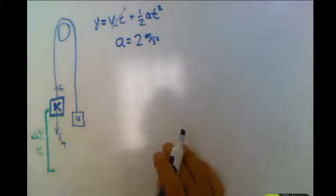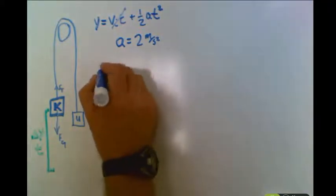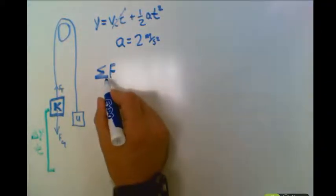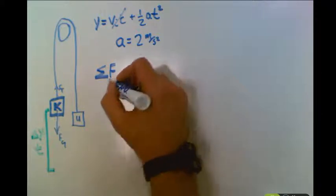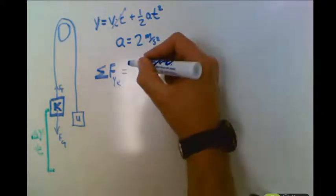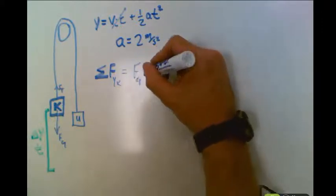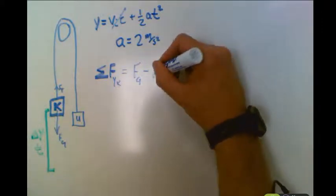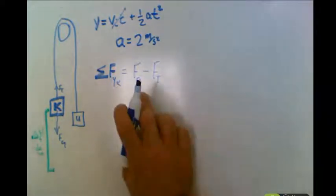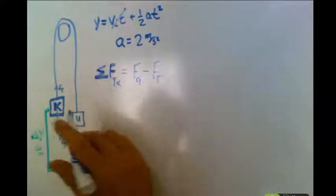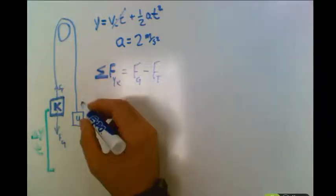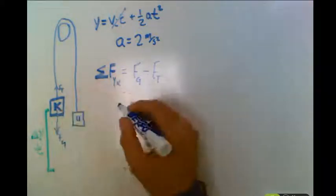So what that means is the sum of the forces, this is a symbol sigma, sum of the forces acting in the y direction of the known mass is equal to the force of gravity minus the force of tension. Now, we know that the force of gravity, we can calculate it because it's a known mass. Let's just pretend that we're given this mass K is 2 kilograms.